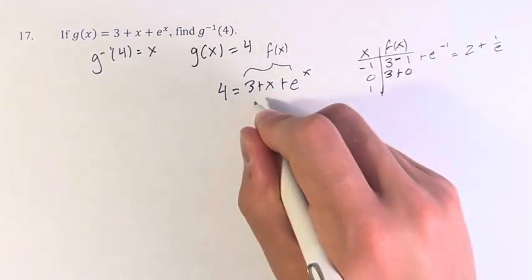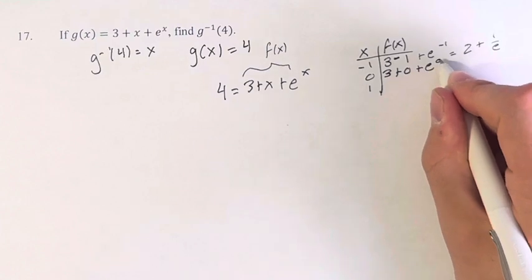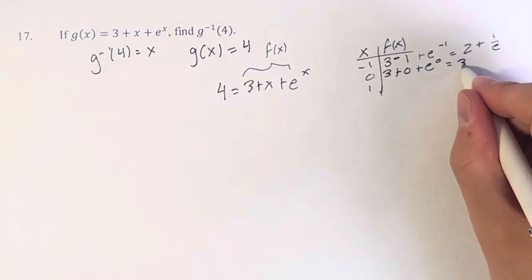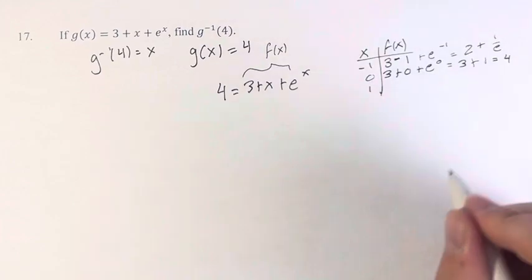0, we have 3 plus 0 now, plus e to the 0. 3 plus 0 is 3. e to the 0 is 1, so we have 3 plus 1 is 4.